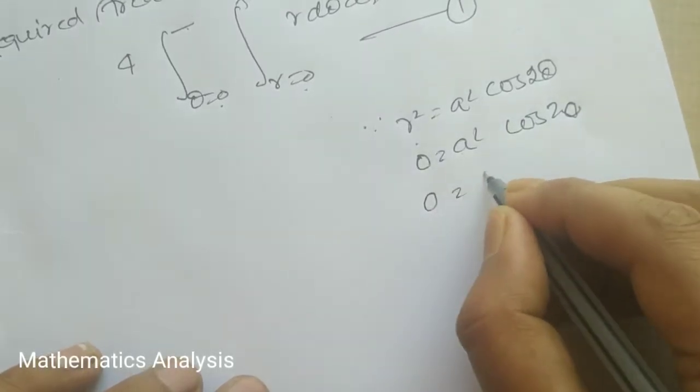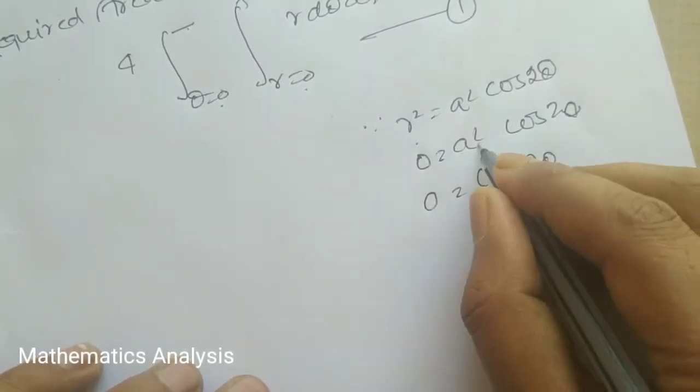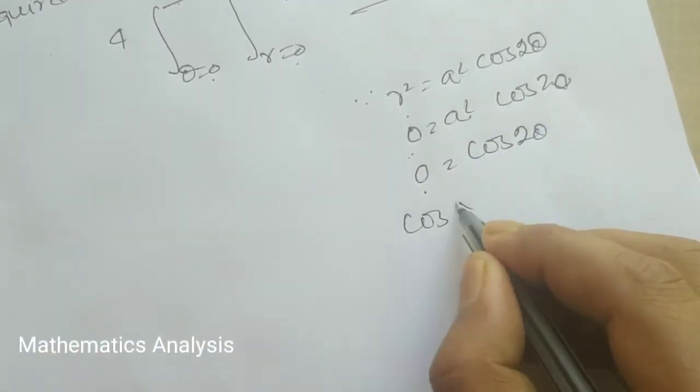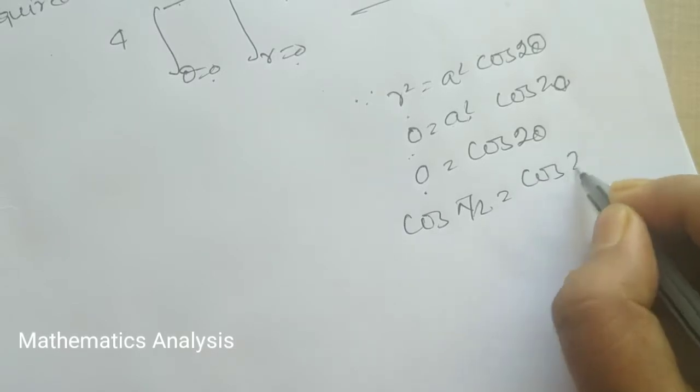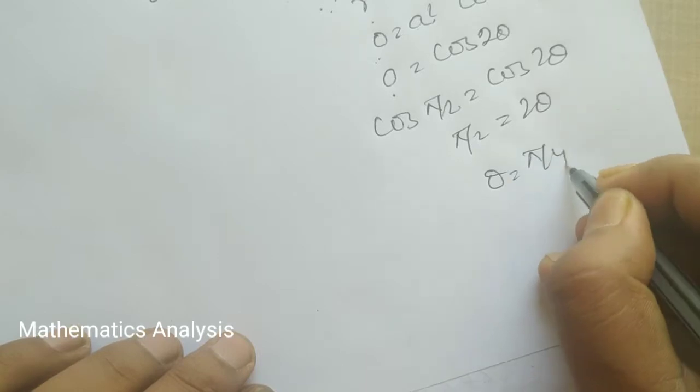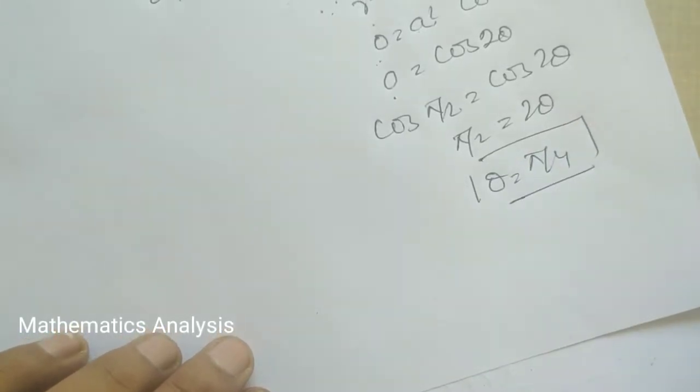So here is 0 squared equals a squared cos 2θ. The square is 0, so cos 2θ equals 0. What is the value? Cos π/2, so 2θ equals π/2. What is the value of theta? π/4.